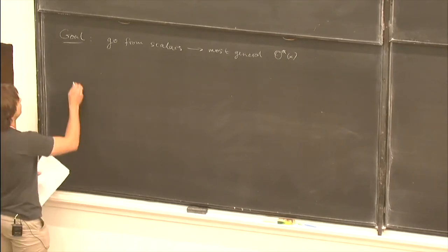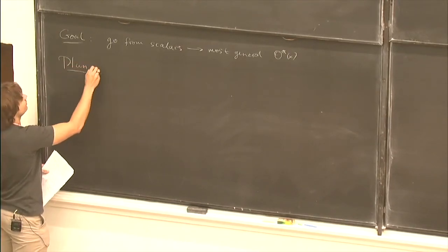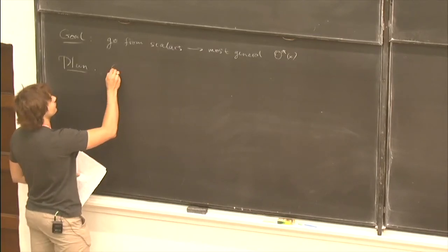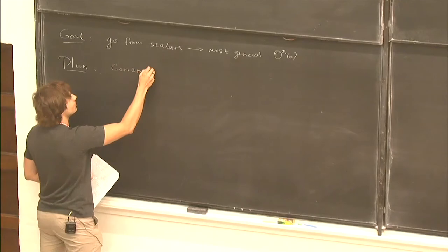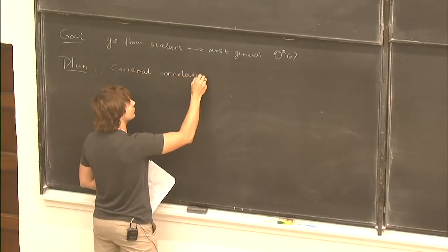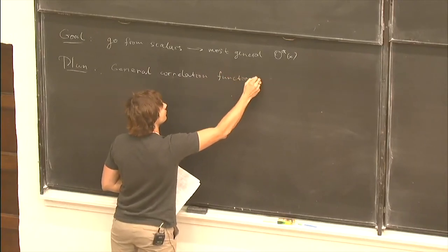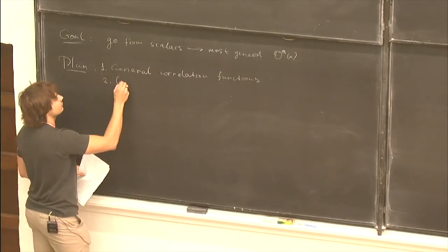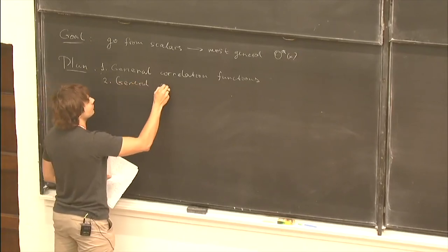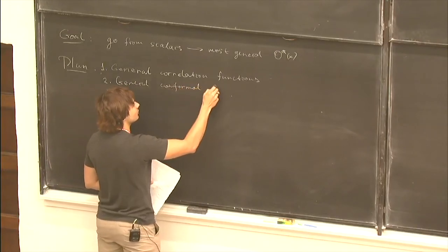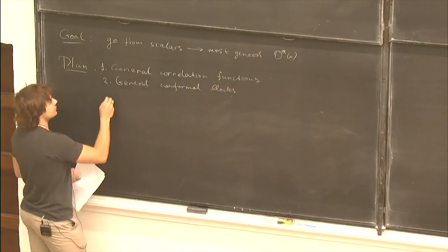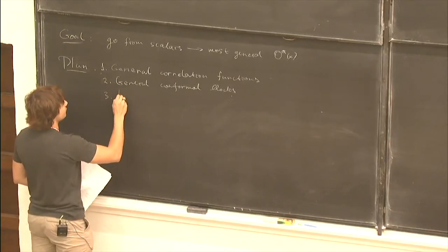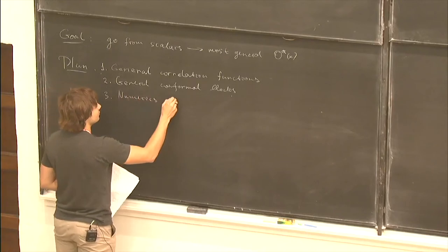The tentative plan is: in the first lecture I will talk about correlation functions of general local operators. In the second lecture, we'll talk about general conformal blocks for four-point functions. And in the third lecture, if we still have time, we will talk about numerics and maybe some results.